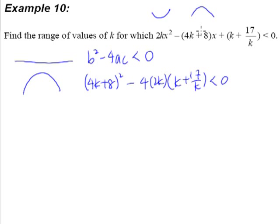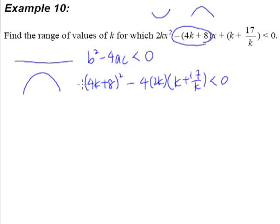Take note here that I did not ignore the negative sign for my coefficient of x. In previous examples, I talked about this before — when you square a negative number, it becomes a positive. So what you have to do is simply expand (4k + 8) accordingly without worrying about the negative sign. It will be fine.